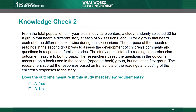B is the correct answer. The study did not use a standardized measure, so the WWC would require reliability information. The study also did not establish the reliability of the outcome measure. Additionally, there are concerns about over-alignment: members of the repeated book group had practice with the book used in the assessment, giving them an advantage over members of the other group. If the study used an over-aligned outcome measure, the WWC would rate analyses of the measure as does not meet WWC group design standards.